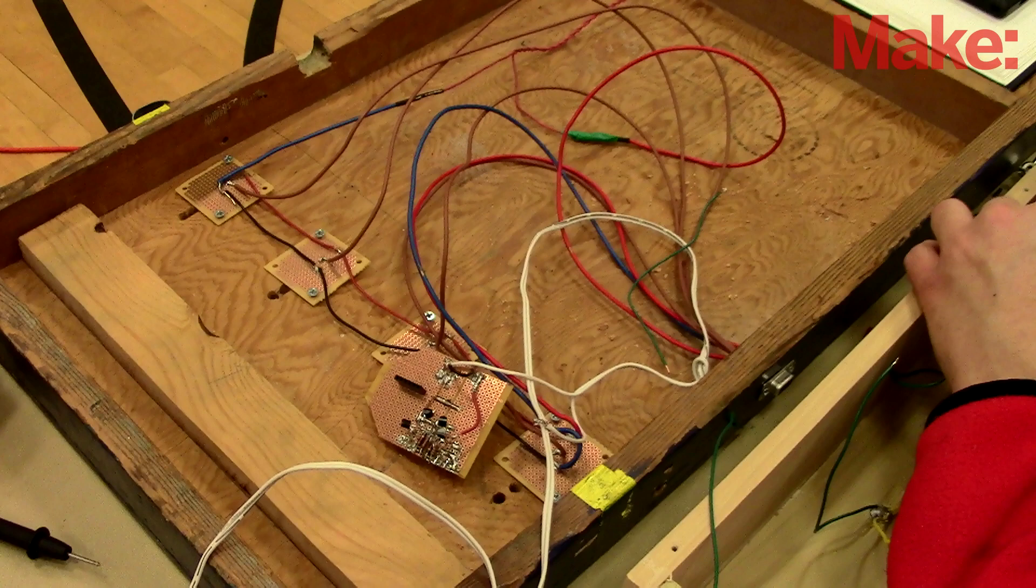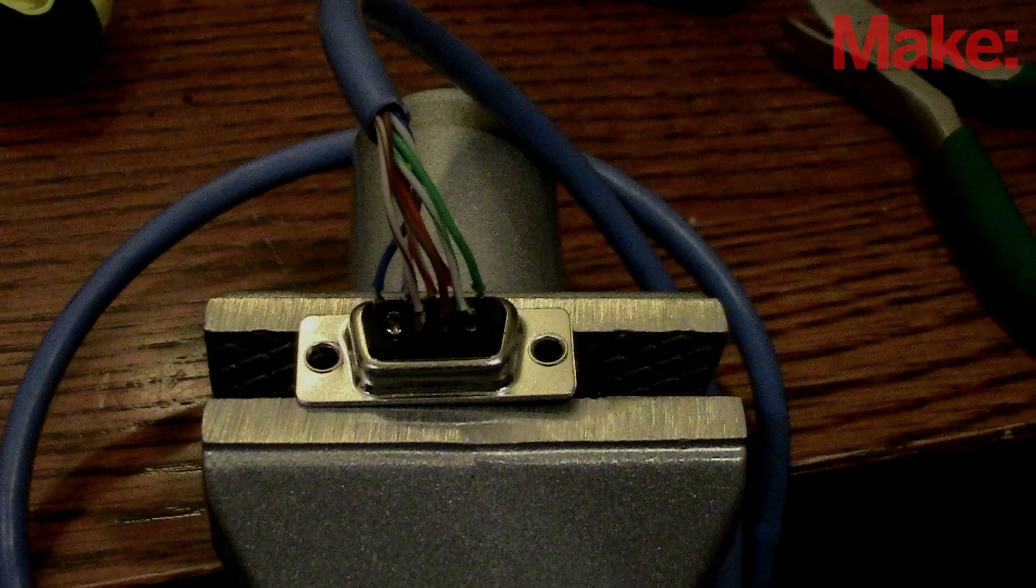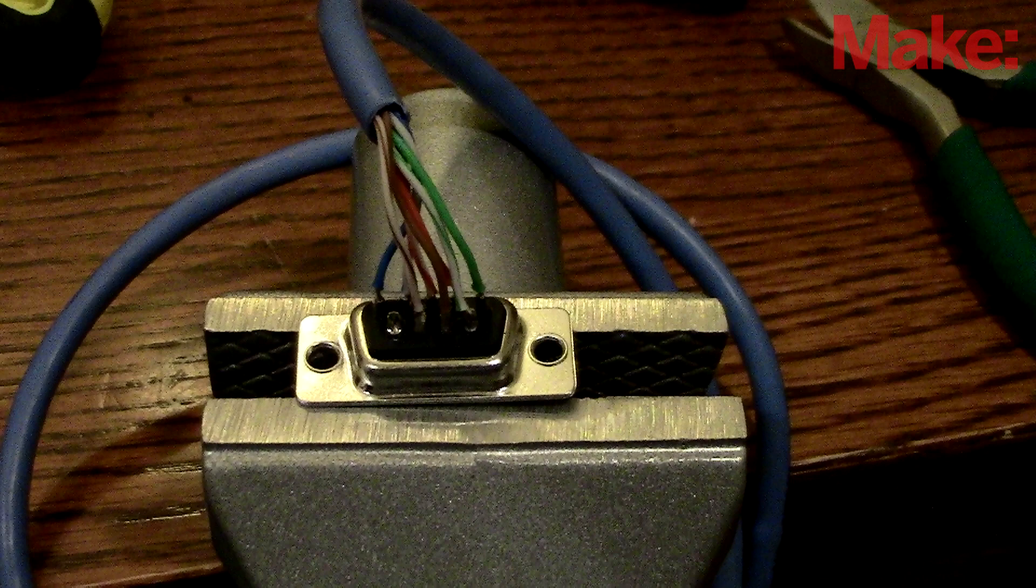Not much changes on the bottom side of the board except that we change out the old connector and put in a DB9. The mate to this DB9 will be cabled up to the gantry box where I'll connect to the shield, thereby providing the sensor input to the Alamode.